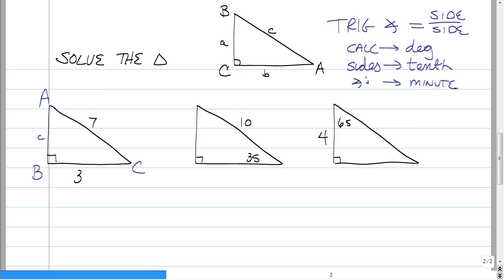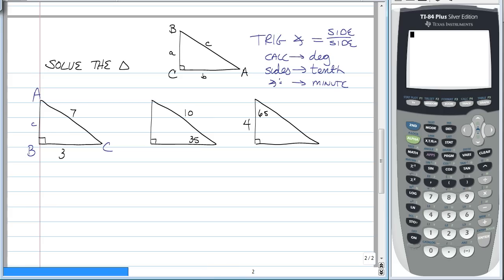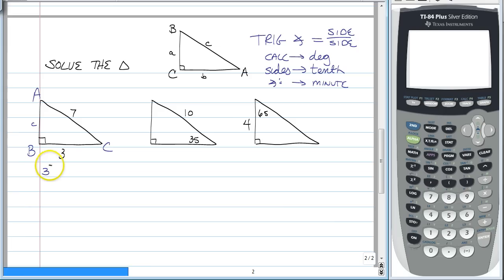So, the purpose of this video is to give you the skills. Now that we're set up in calculator mode, let's do this. When it says solve the triangle, you need to find all of the missing pieces — the angles and the missing sides. To find little c, you can use trigonometry, or if you feel more comfortable, you can use the Pythagorean theorem since you have the other two. So, you've got 3 squared plus little c squared is equal to 7 squared, and you're going to get c is equal to approximately 6.3.